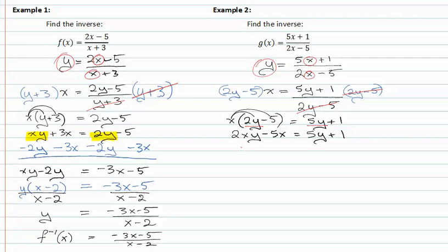Now that I've distributed the x, I'm going to add 5x to both sides, and subtract 5y from both sides. When I do that, I get 2xy minus 5y is equal to 5x plus 1.